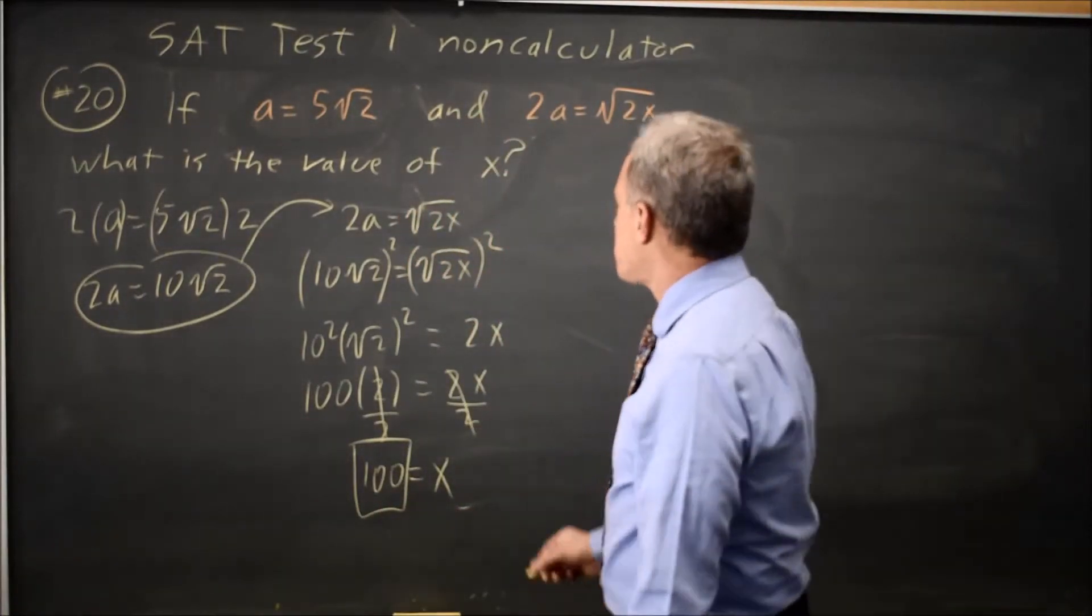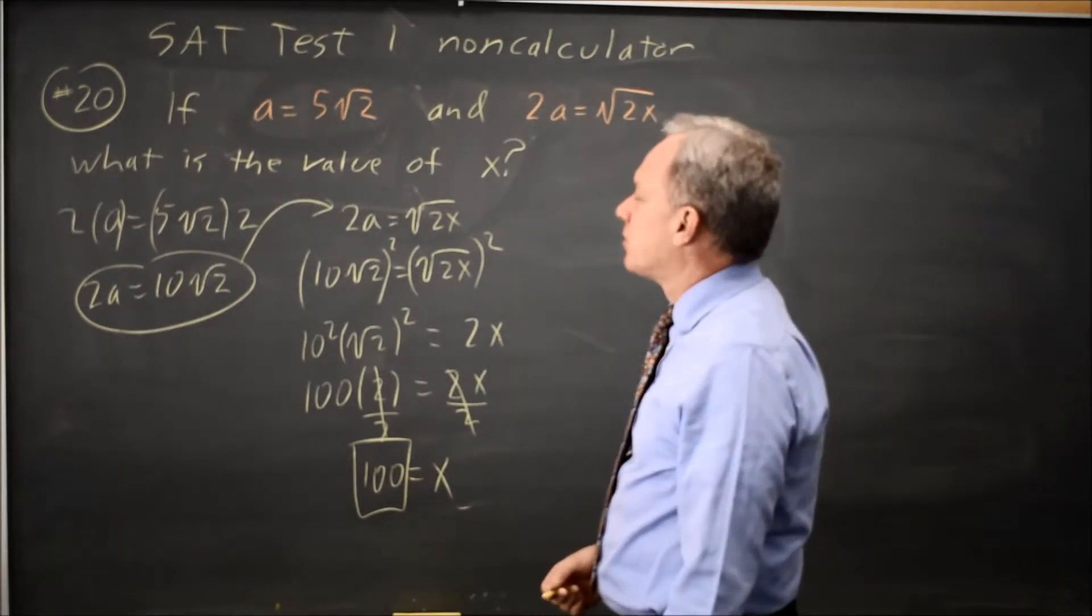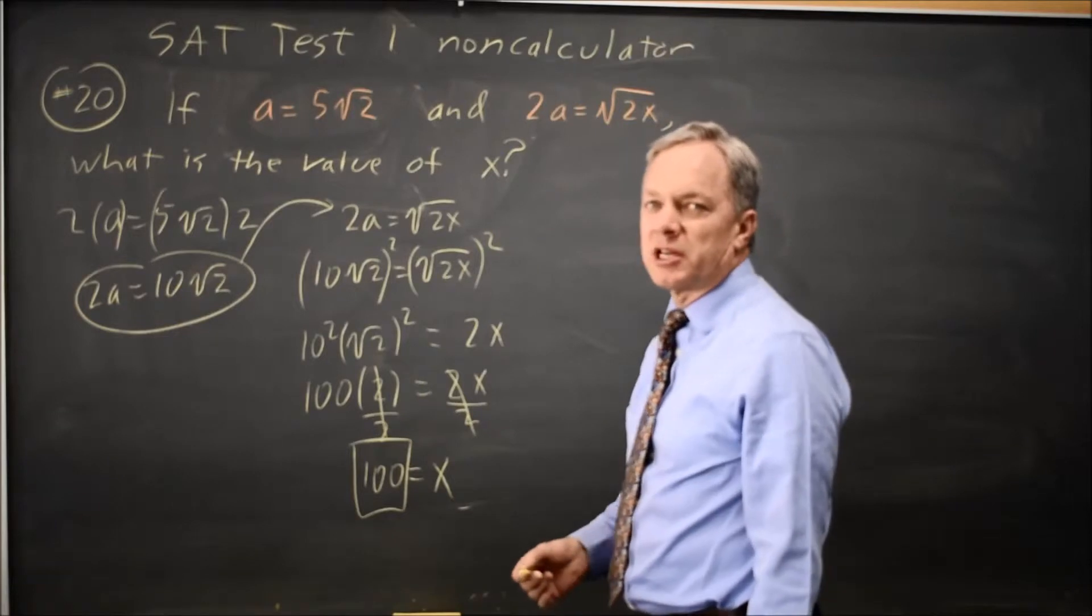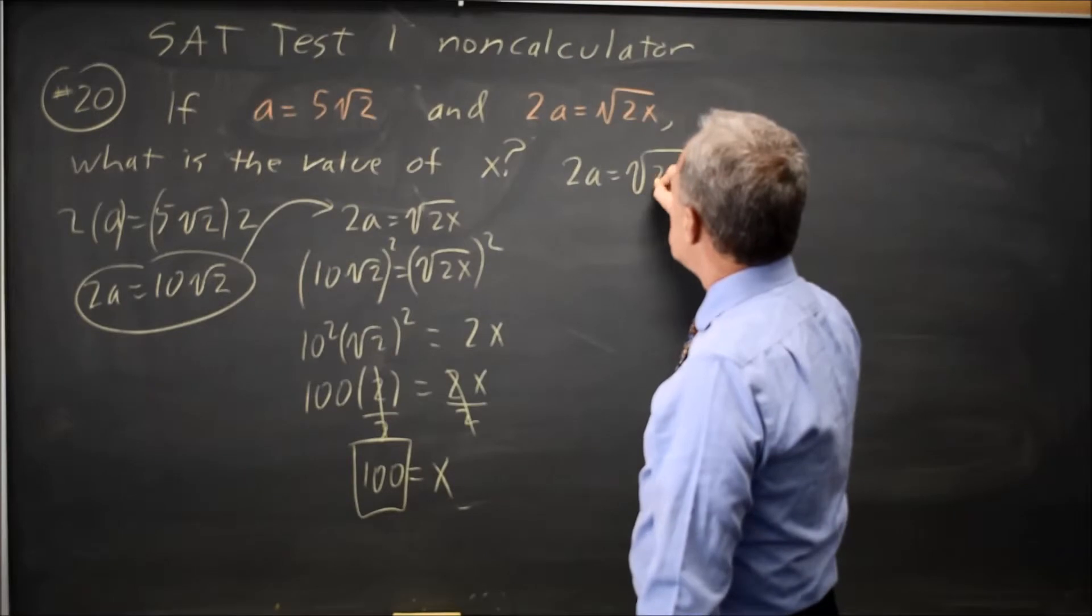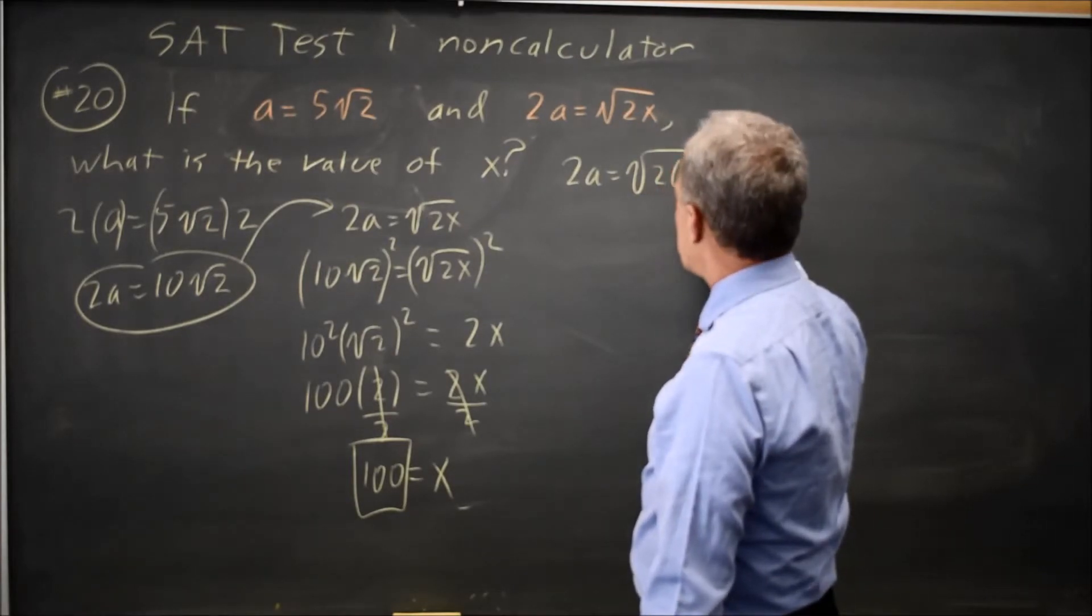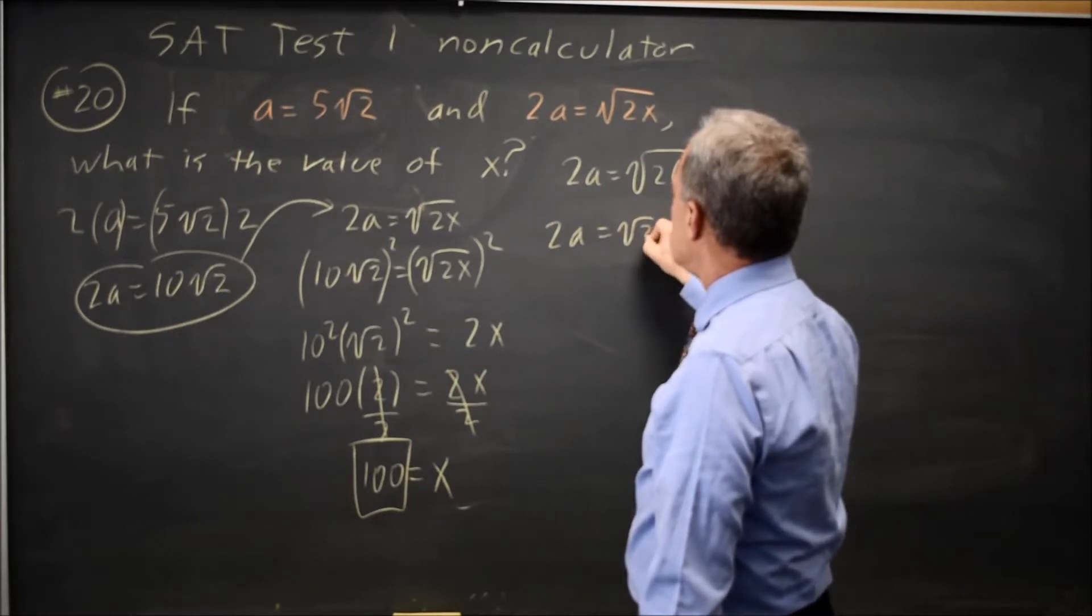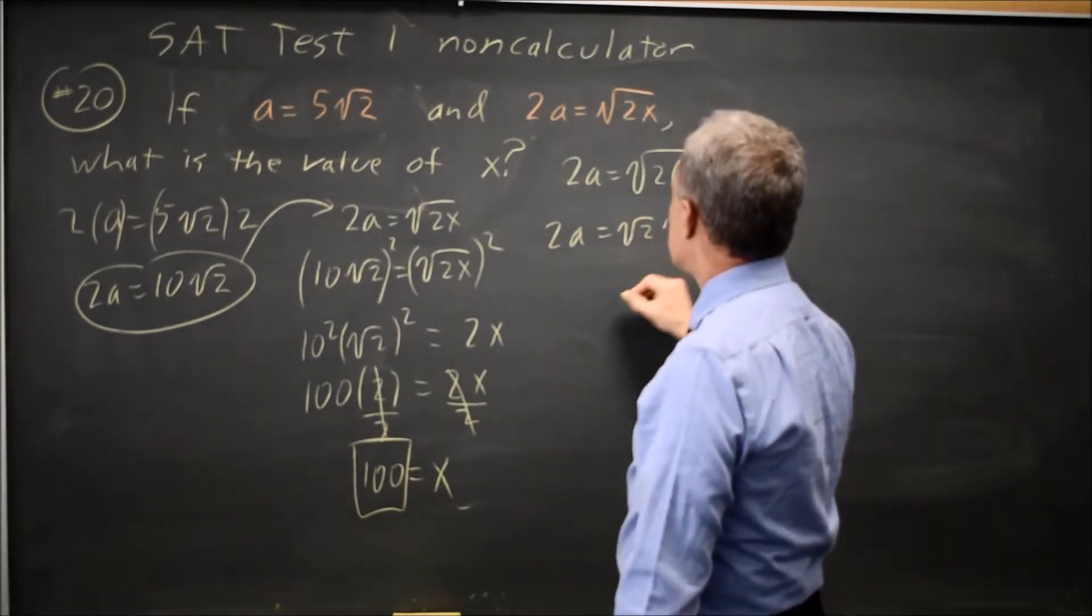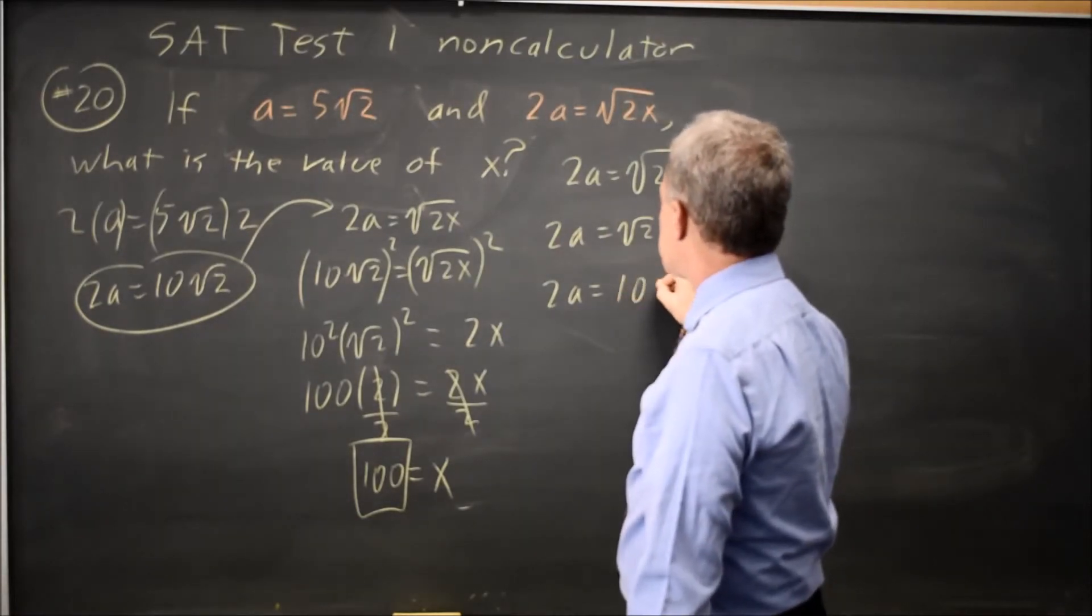If I wanted to check that, I probably wouldn't take time to check on problem 20. Either I'm comfortable with this or I'm more worried about other answers. But if I did want to check that, I would say 2A equals root 2X is root 2 times 100. So 2A equals root 2 root 100. 2A equals root 100 is 10, so that's 10 root 2.